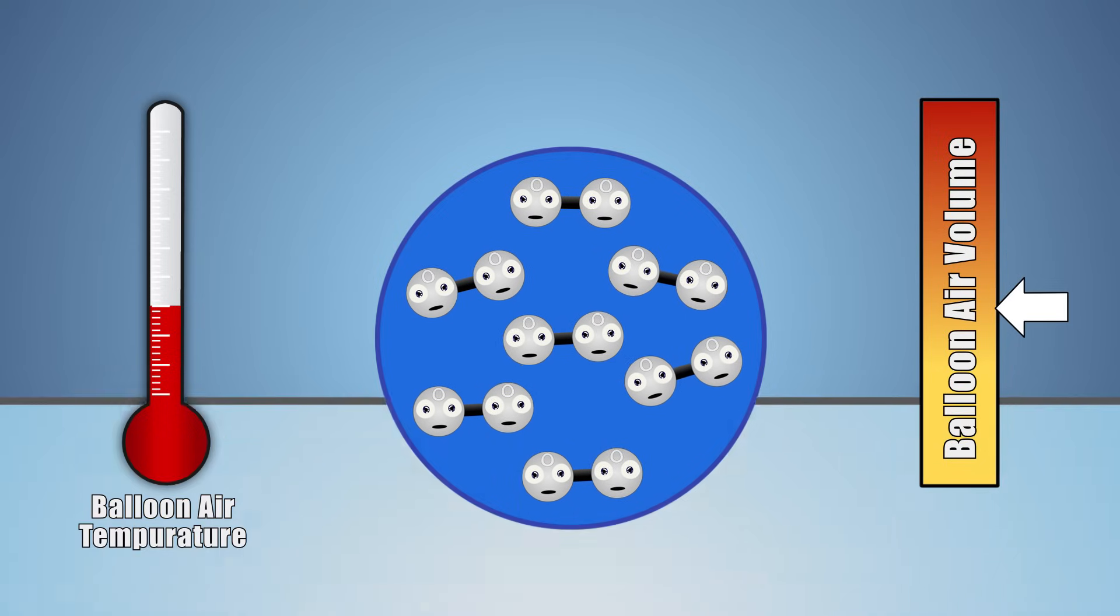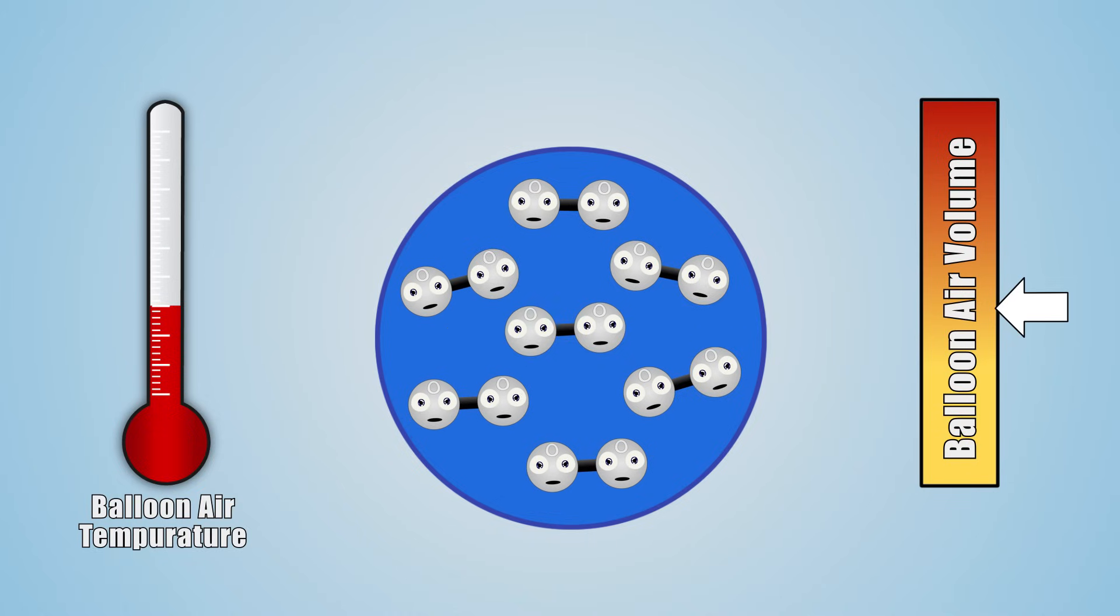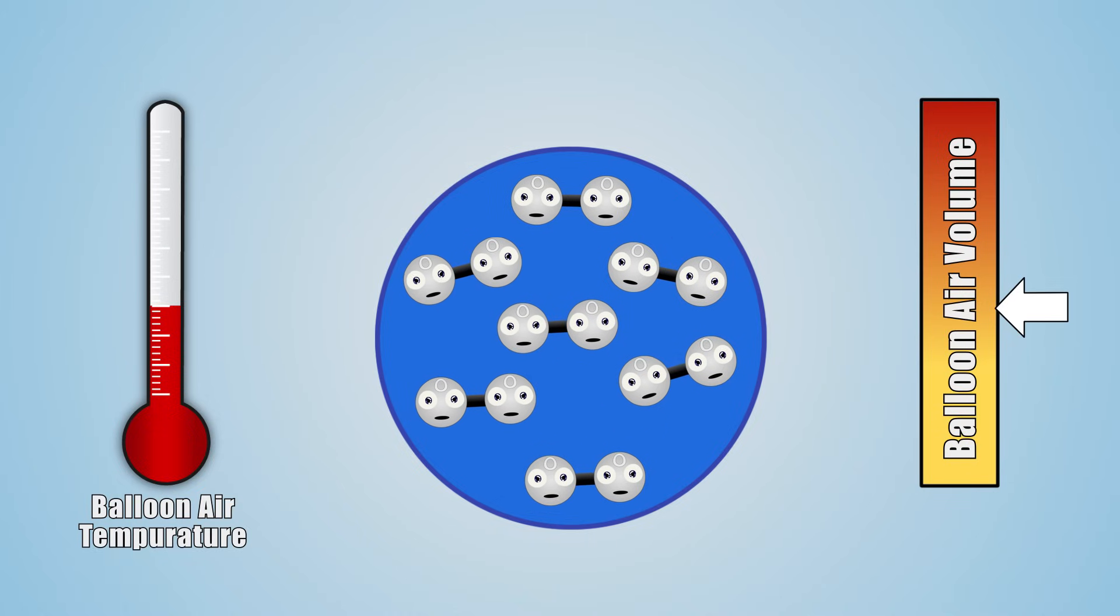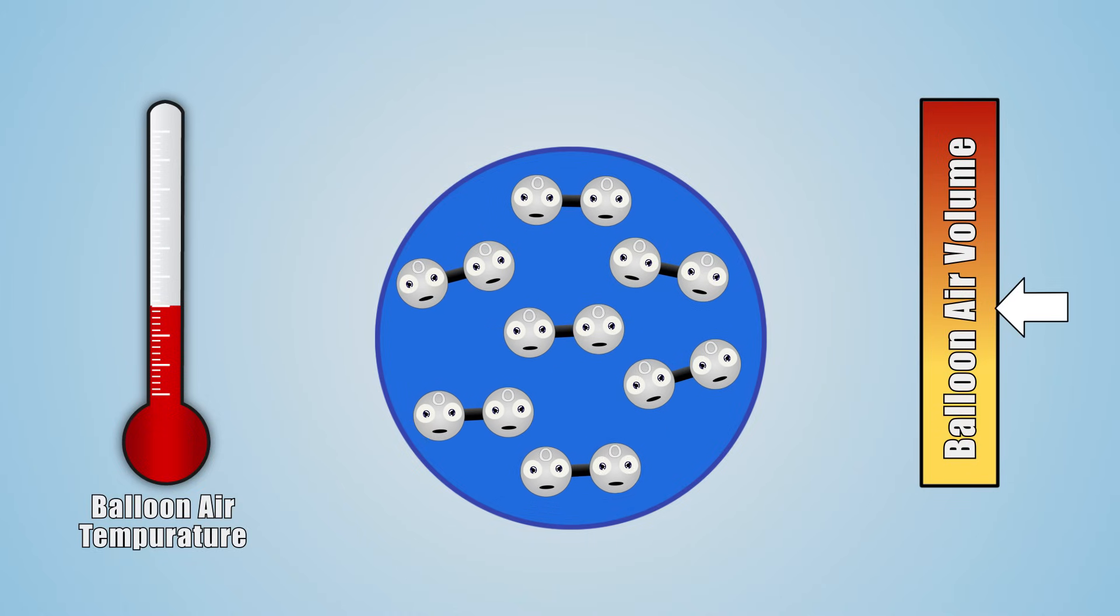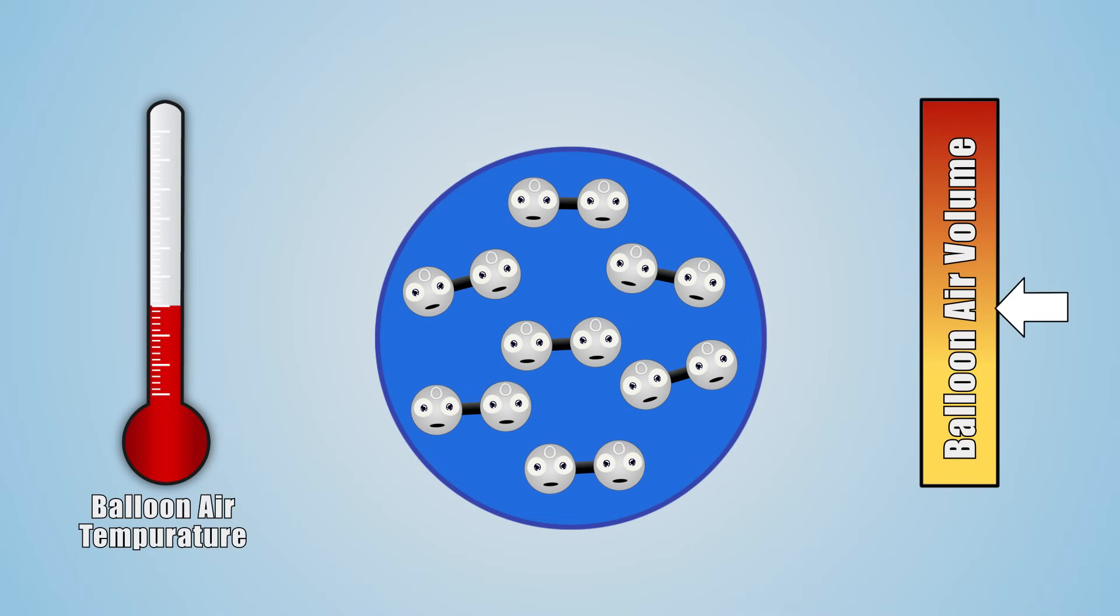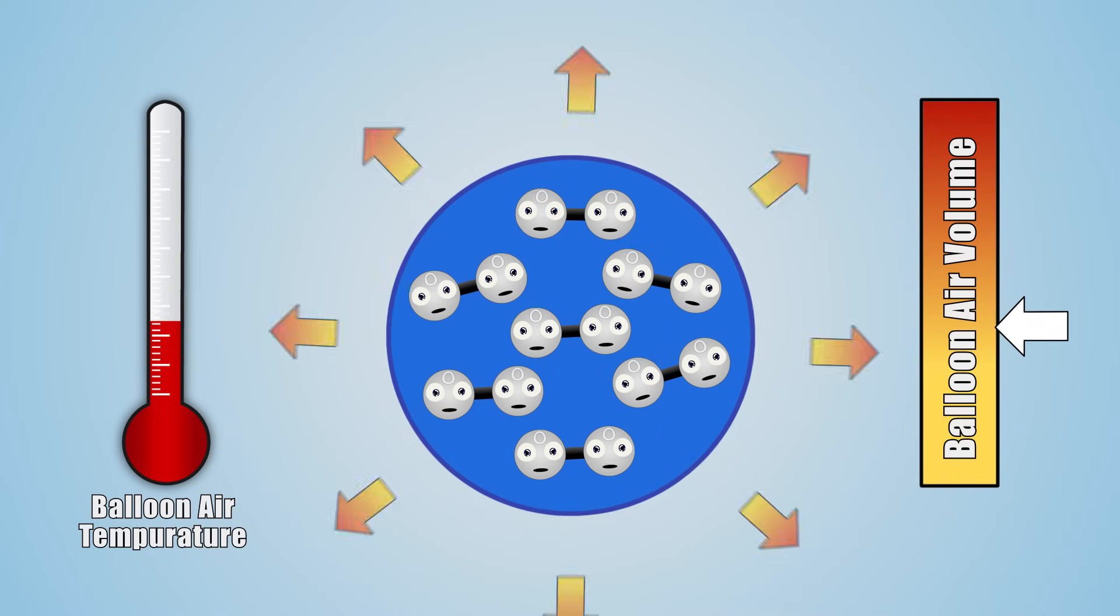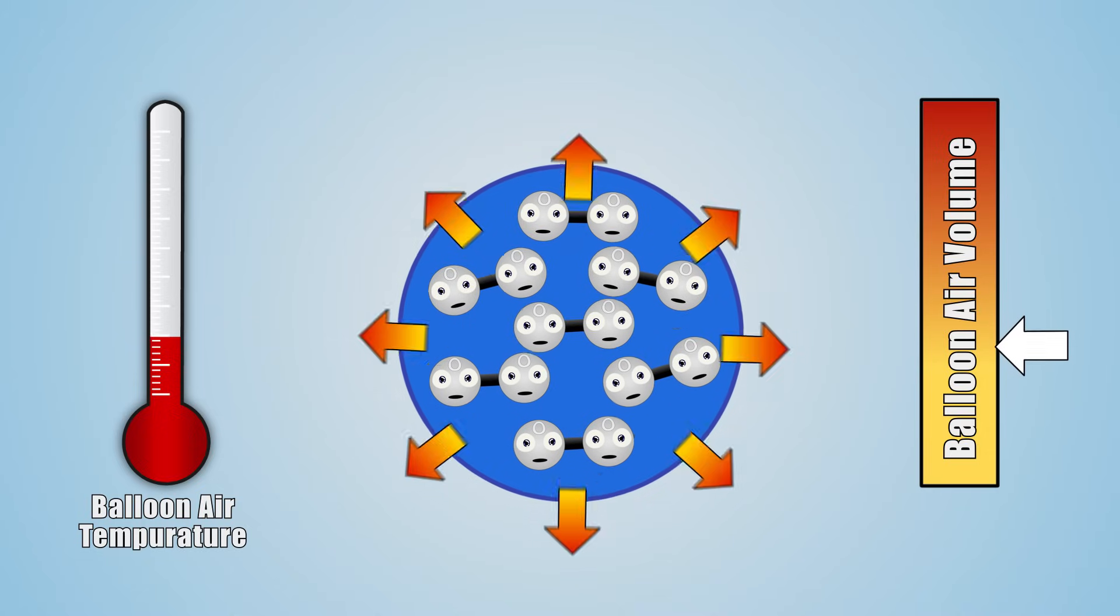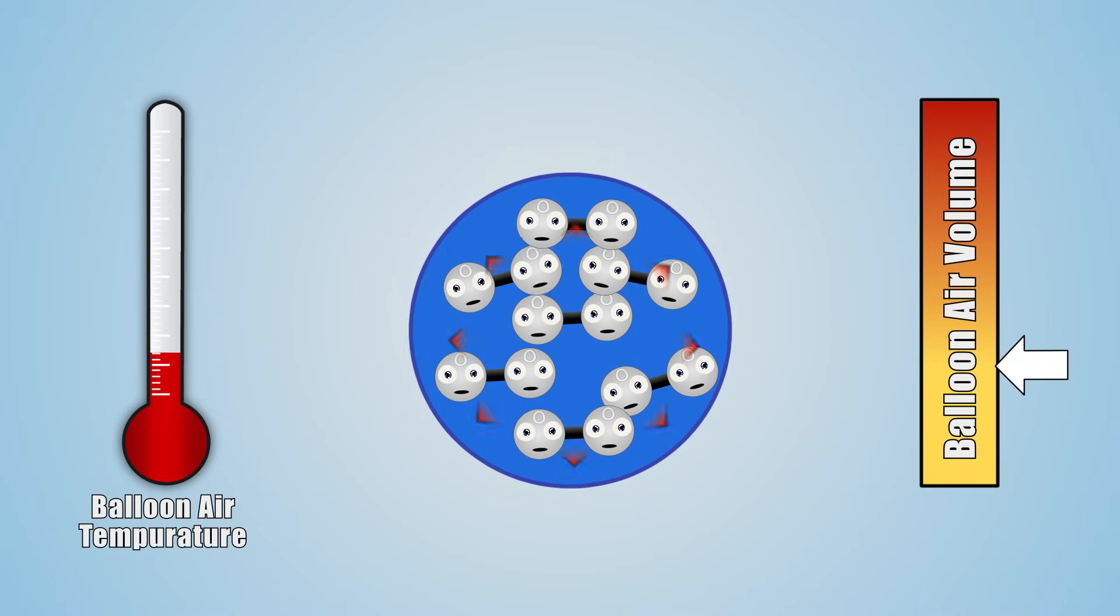In the second portion of our experiment, we place our balloon in a freezer, which causes a transfer of energy in the form of heat from the warmer air molecules inside our balloon into the cold freezer. As the energy is removed from our air molecules, they slow down, drop in temperature, and get closer and closer together, decreasing the volume of space they take up.